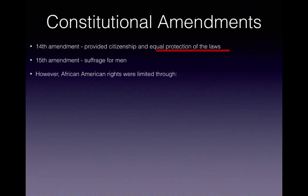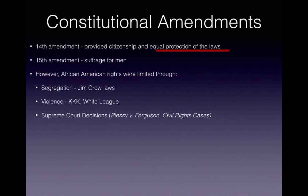However, African American rights were still limited through the following. You have segregation and Jim Crow laws, which allowed for separate facilities. You have violence — groups like the KKK and the White League emerged and terrorized African Americans. The Supreme Court helped limit African American rights through Plessy v. Ferguson, which established the separate but equal doctrine, and also the civil rights cases, which stated the government cannot stop private businesses from discrimination. Local political tactics including poll taxes, literacy tests, and grandfather clauses were created to limit the number of African Americans who could vote.